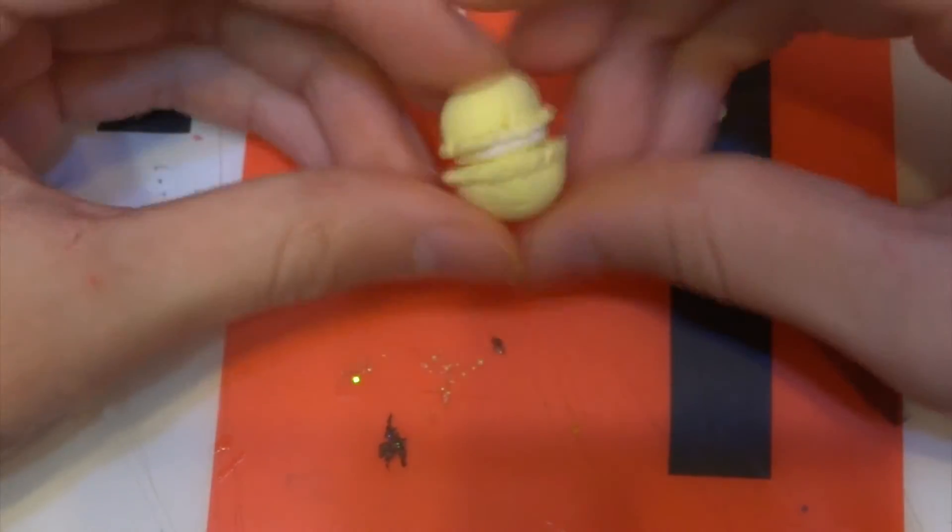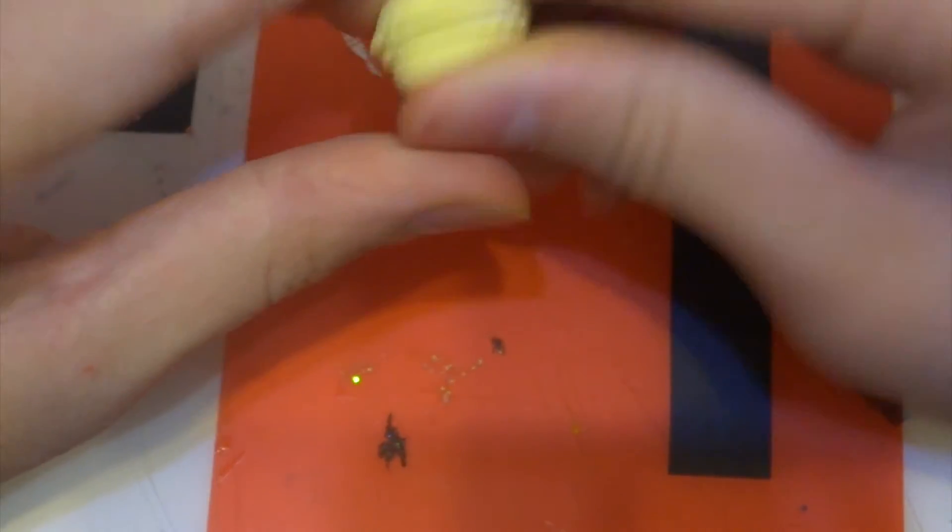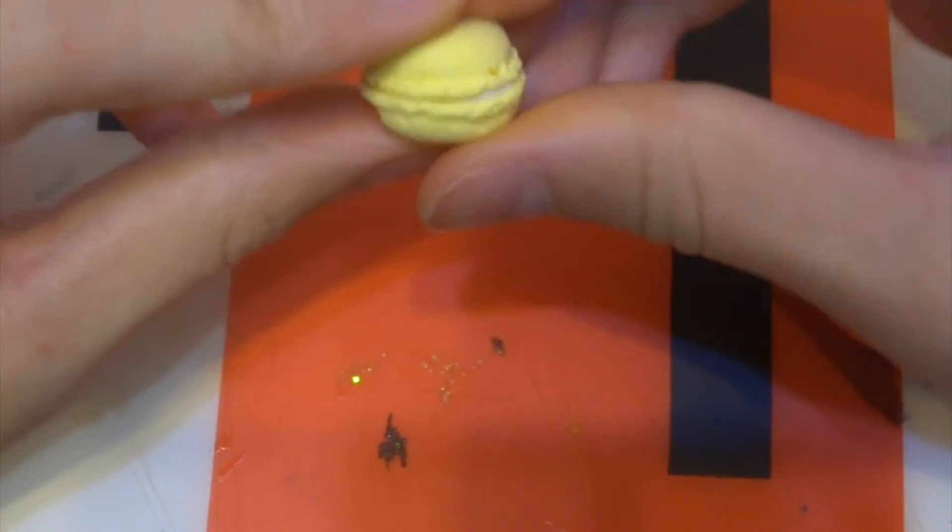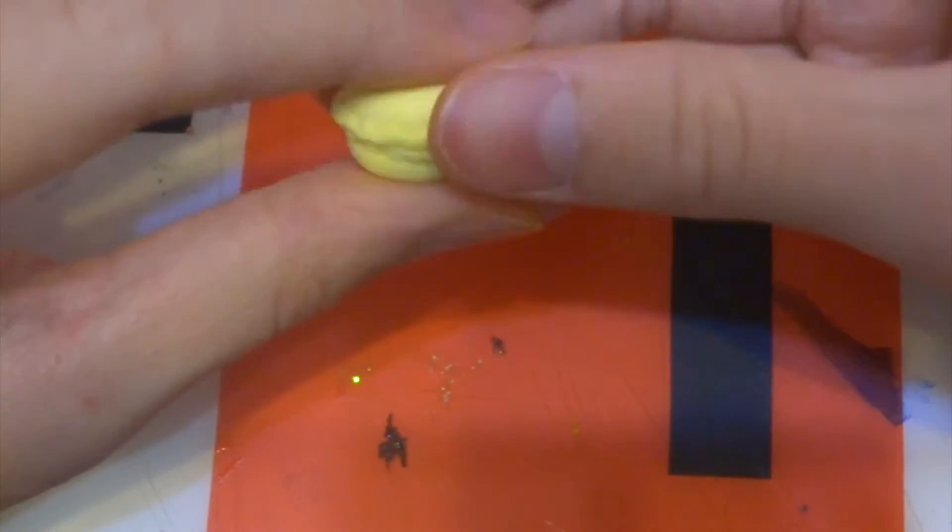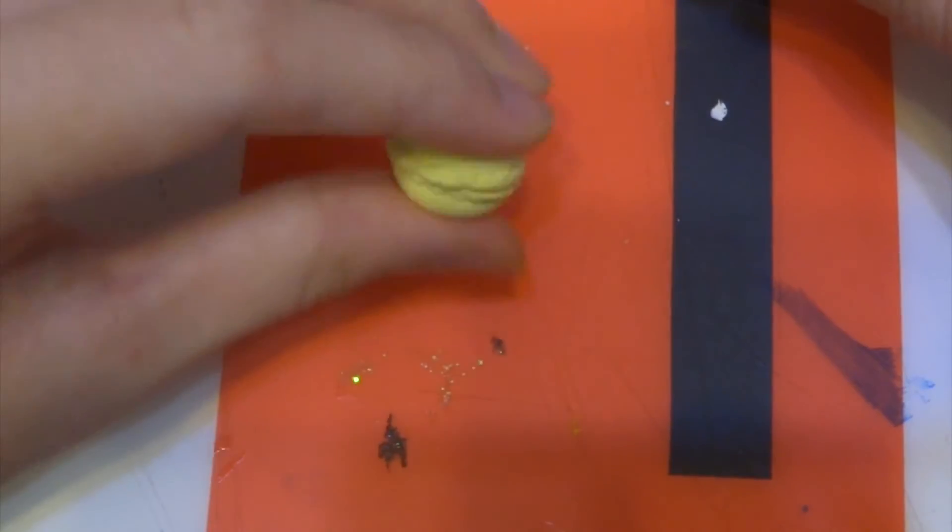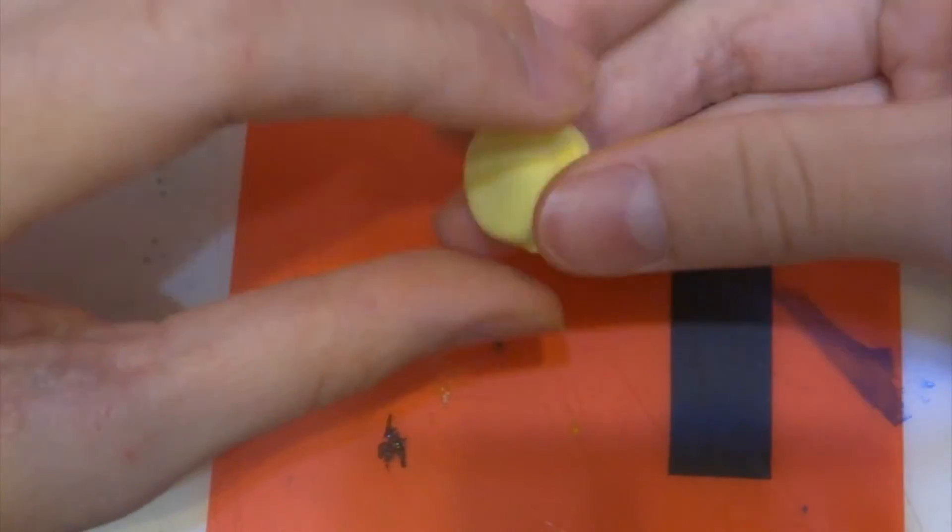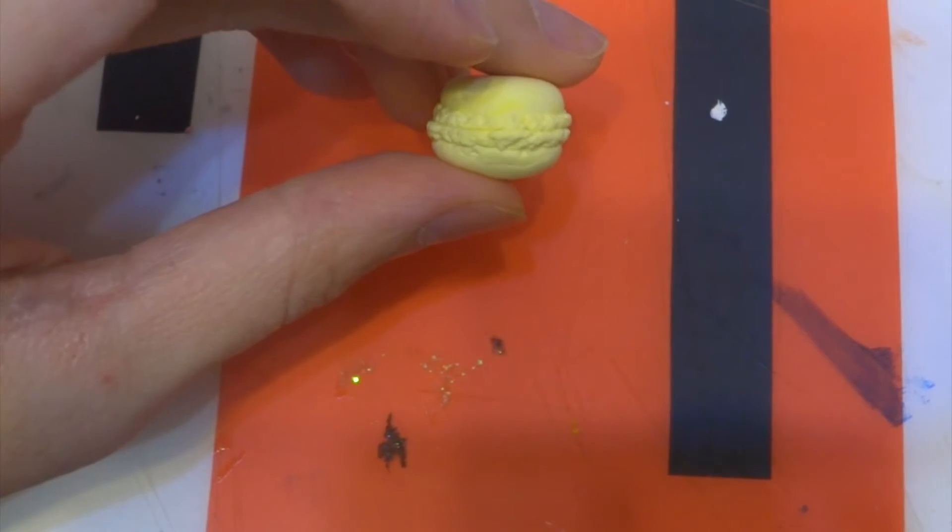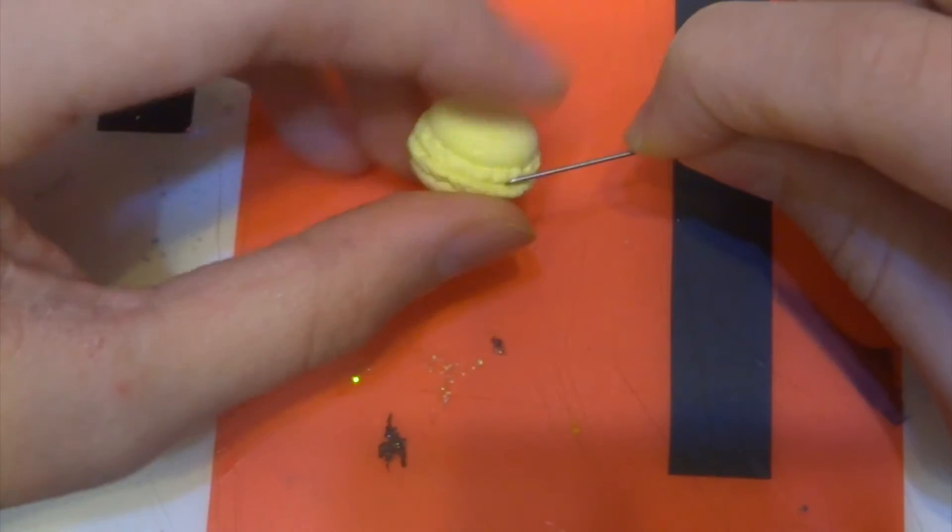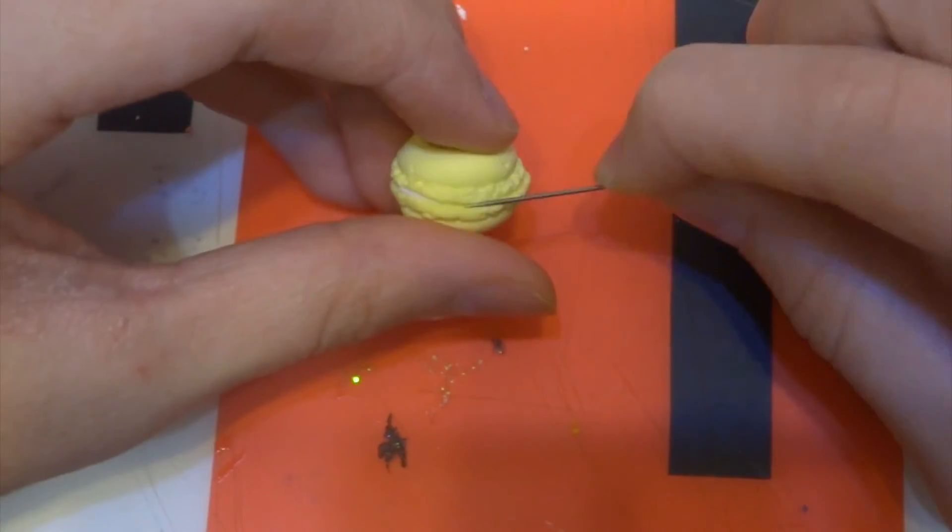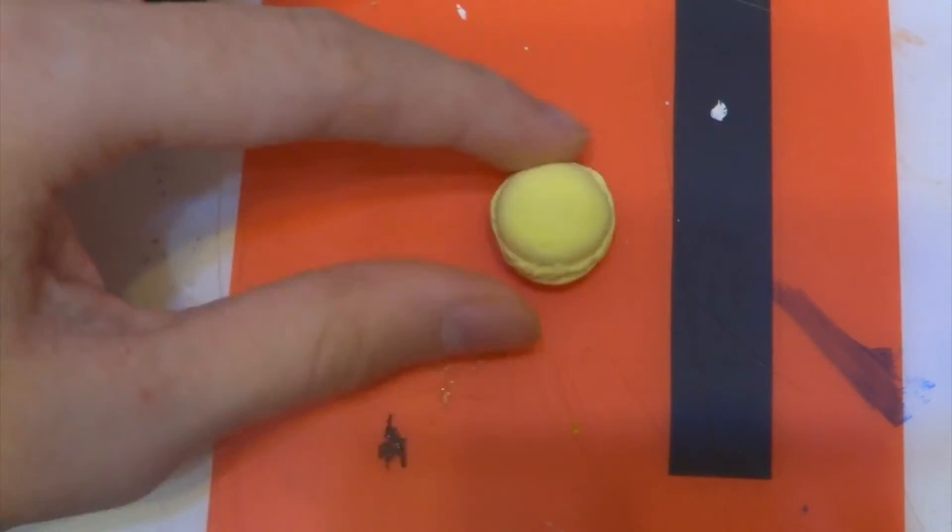Now I gently push it. Remember to push on each side gently. Don't push so hard or it will break. Look, this is the shape. Just adjust the size by yourself. If you can't see your chocolate, you can use the needle to make a gap.